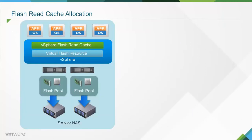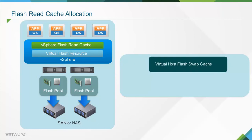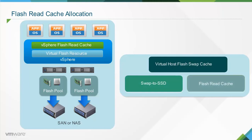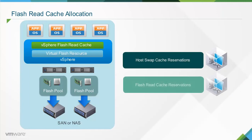The FlashRead cache infrastructure includes parts such as the virtual flash resource and flash resource management. All host flash devices can be pooled together as a virtual flash resource, and virtual machines and virtual machine disks can reserve virtual flash resources by specifying configuration in the VMware vSphere web client. Virtual host flash swap cache, which provides legacy support for swap to SSD, and flash read cache can both be allocated from the same flash resource simultaneously. Host swap cache reservations are immediately allocated, but flash read cache reservations are allocated only when the virtual machine powers on; if insufficient flash resource capacity is available, the virtual machine fails to power on.